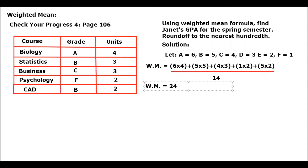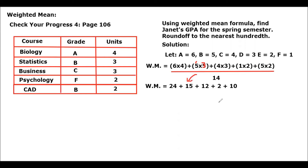Computing the numerator: 6 times 4 is 24, plus 5 times 3 is 15, plus 4 times 3 is 12, plus 1 times 2 is 2, plus 5 times 2 is 10. For Statistics, 5 times 3 is 15. All of this is over 14.